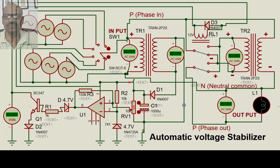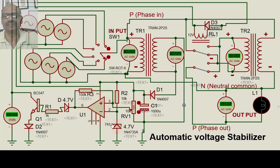This voltage will change when the input voltage changes, and the rectified voltage also changes. But the zener diode voltage will not change — that means the inverting terminal voltage stays fixed. We have explained the operational amplifier used as a comparator at length in a separate video; please go through that to understand it better.